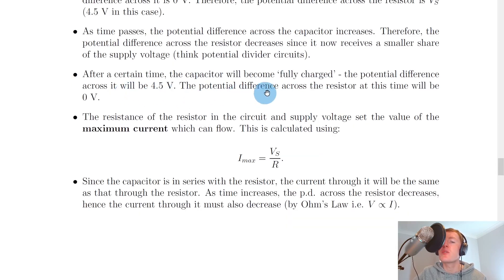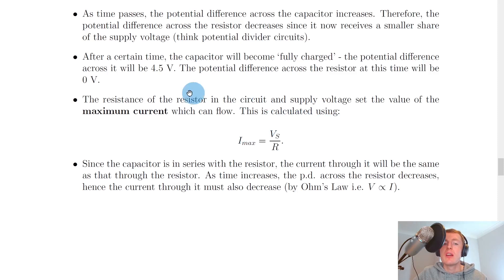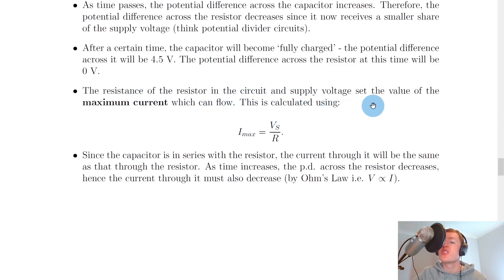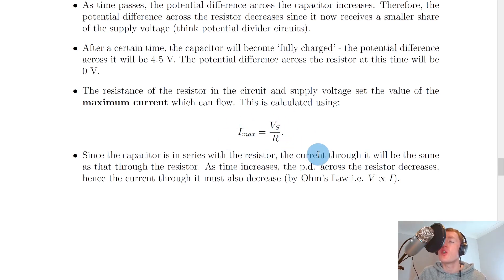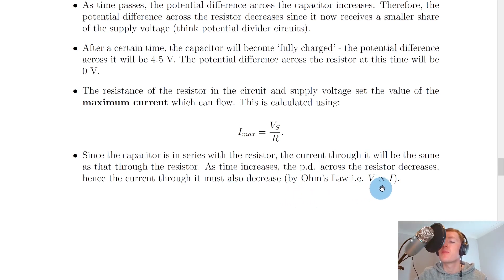After a certain time, the capacitor becomes fully charged and the potential difference across it will be 4.5 volts, while the potential difference across the resistor will be 0 volts. The resistance and supply voltage set the maximum current, calculated as I_max = Vs/R — useful for problems on this topic. Since the capacitor is in series with the resistor, the current through it is the same. As the potential difference across the resistor decreases, the current must also decrease by Ohm's law, since voltage is directly proportional to current for a fixed resistance at fixed temperature.